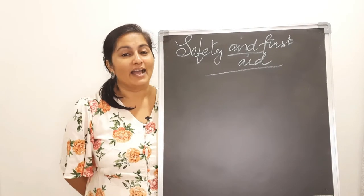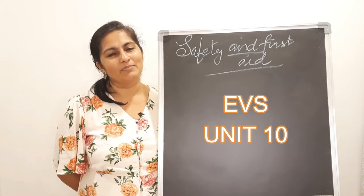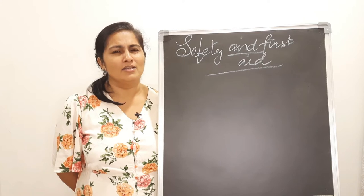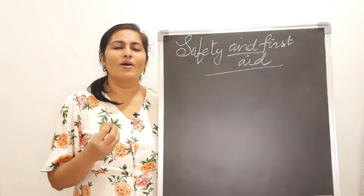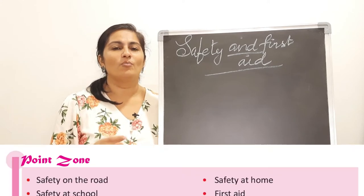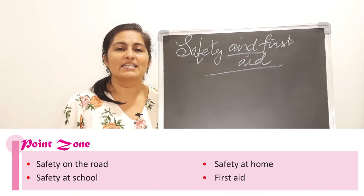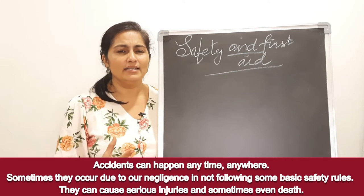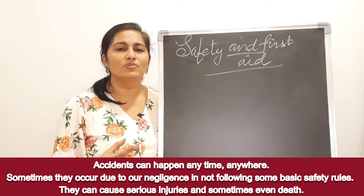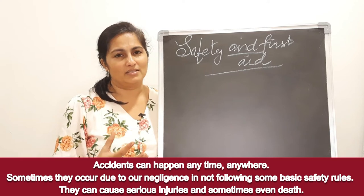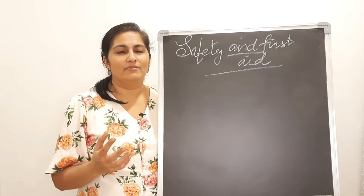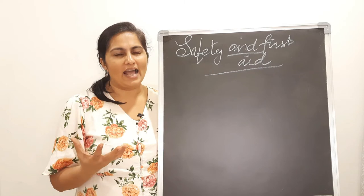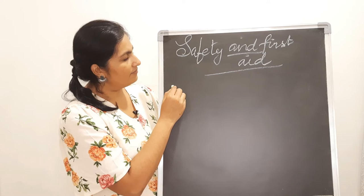Welcome back. We are in Unit 10 today, where we are going to learn about safety and first aid. In the last unit we learned about emergencies — natural calamities and all kinds of emergencies that can happen because of small negligence, at home or at school. Accidents are something that happen suddenly and cause a threat, a wound, or some kind of harm to a person. Accidents can actually be avoided if we take a few precautions, and the first kind of accidents we can avoid is by practising road safety.